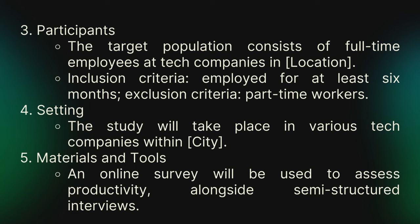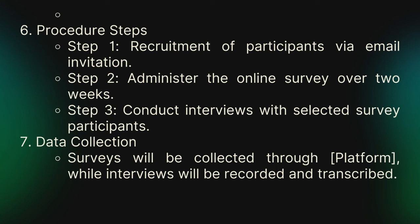For qualitative inclusion criteria: employees employed for at least six months; part-time workers are excluded. For the setting: the study will take place in various tech companies within a particular city or locality. For materials and tools: an online survey will be used to assess productivity alongside semi-structured interviews. For the steps: recruit participants, administer the survey online, then conduct interviews with selected survey participants.